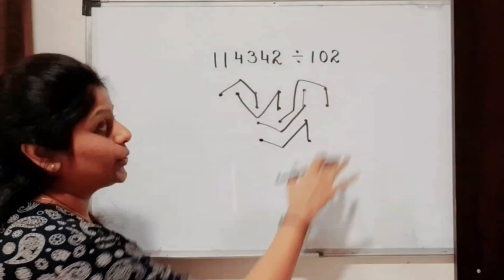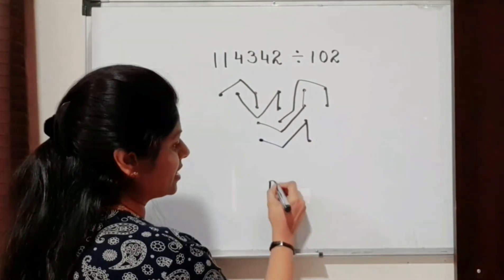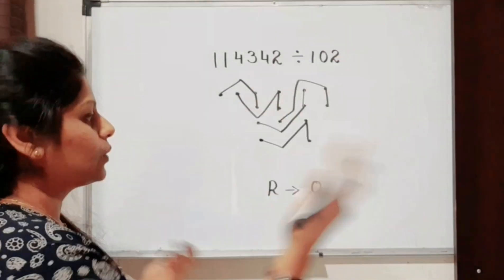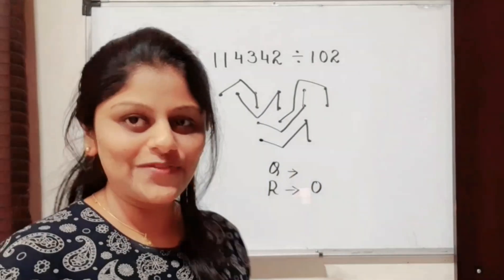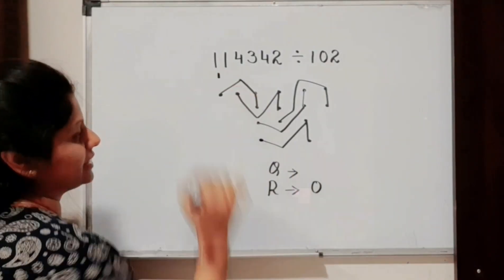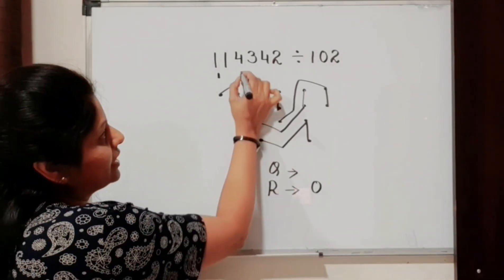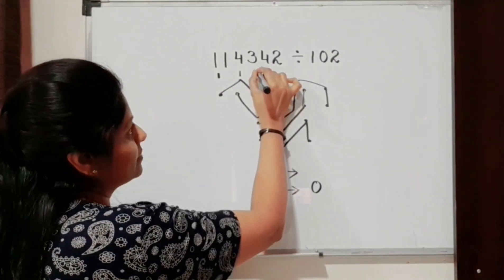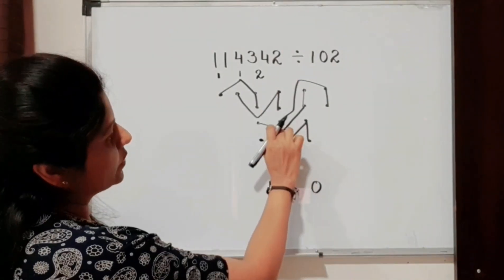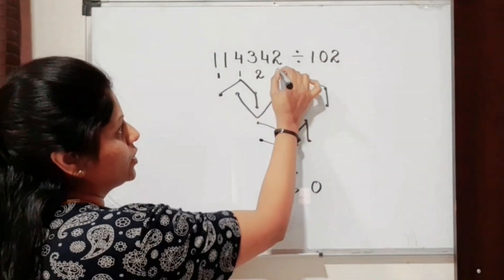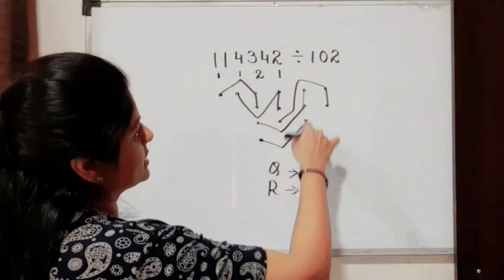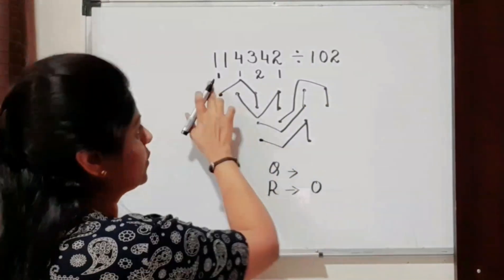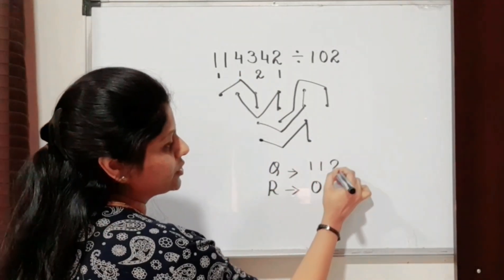This is also connected. Do we have any dots remaining? No. Therefore our remainder is zero — it is perfectly divisible. For the quotient, we count the beginnings of each 1-0-2 pattern per column: first column has one beginning, second column has one beginning, third column has two beginnings, fourth column has one beginning, and the last columns have no new beginnings. Therefore our quotient is 1121.